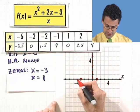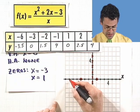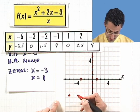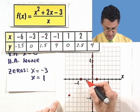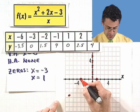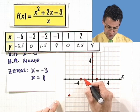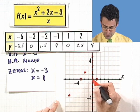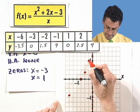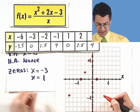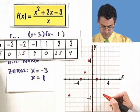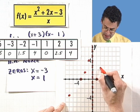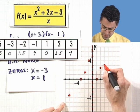At negative 6, I'm at 4. At negative 3.5, I'm at 0. At negative 2, I'm at 1.5. At negative 1, I'm at 4 — way up there. At 1, I'm at 0. At 2, I'm at 2.5. At 3, I'm at 4.